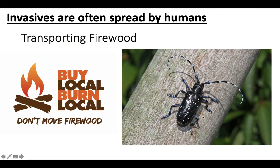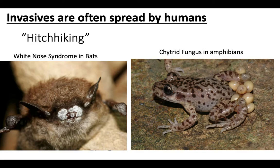Invasives are also spread through the transporting of firewood. The Asian longhorn beetle is an example — don't bring firewood from another forest because it might have beetles inside, and if they escape they can decimate the forest. Buy local and burn local firewood to prevent the spread of invasive beetles. This is a kind of hitchhiking — invasive species hitchhiking on humans from one place to another. One example is white-nose syndrome in bats: tourists visiting caves picked up a fungus and spread it to other bat caves on their shoes or clothes. A similar phenomenon is the chytrid fungus in amphibians, which is absolutely wiping out amphibian species worldwide.